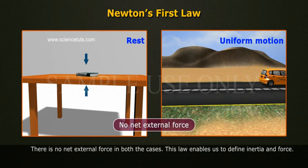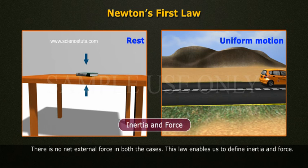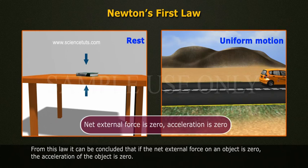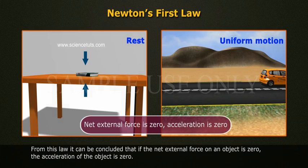There is no net external force in both the cases. This law enables us to define inertia and force. From this law, it can be concluded that if the net external force on an object is zero, the acceleration of the object is zero.